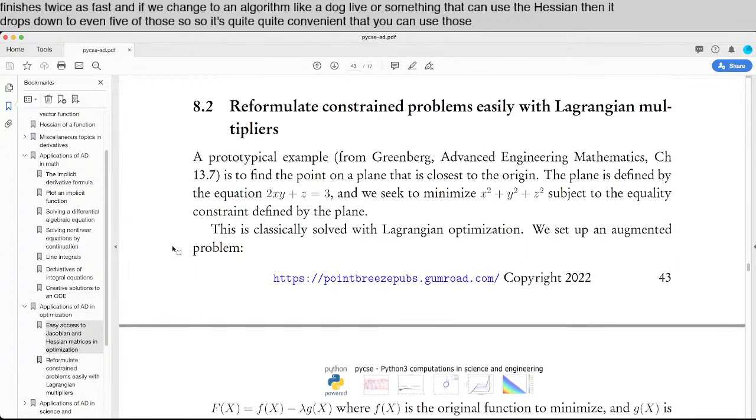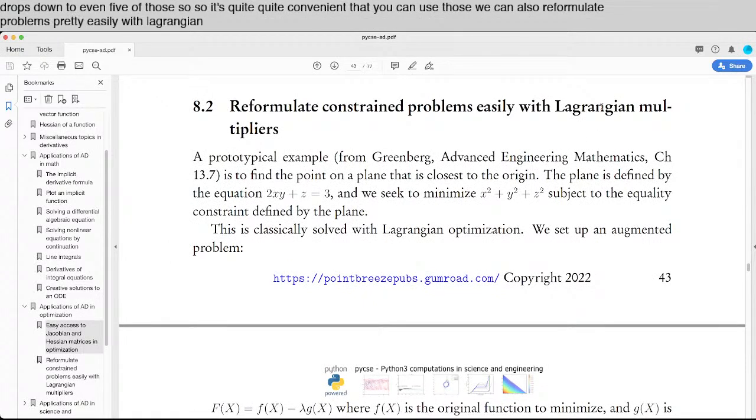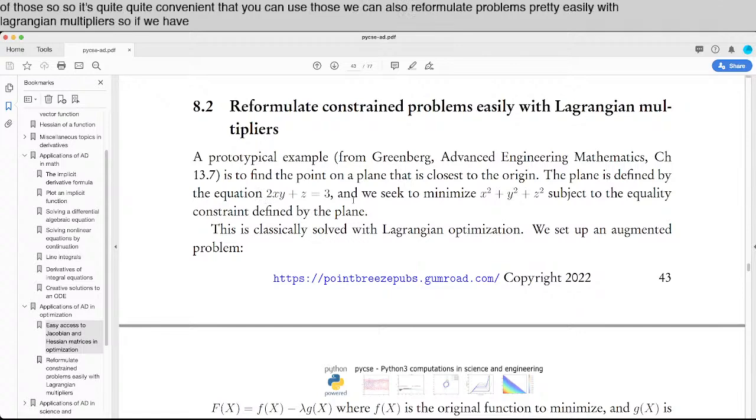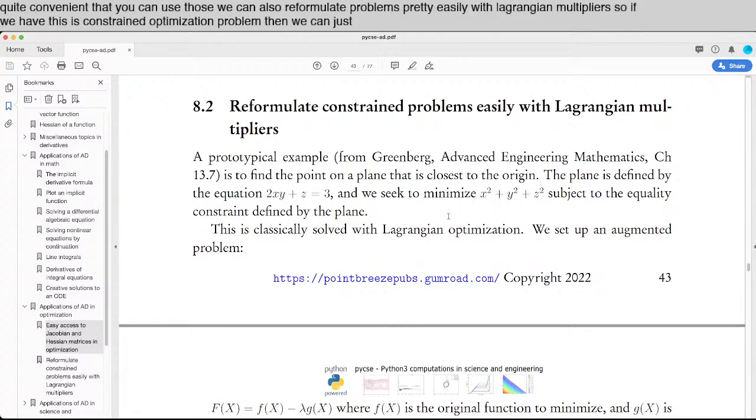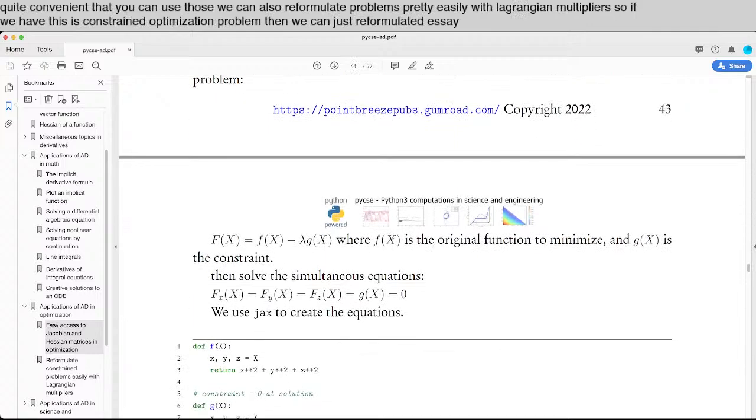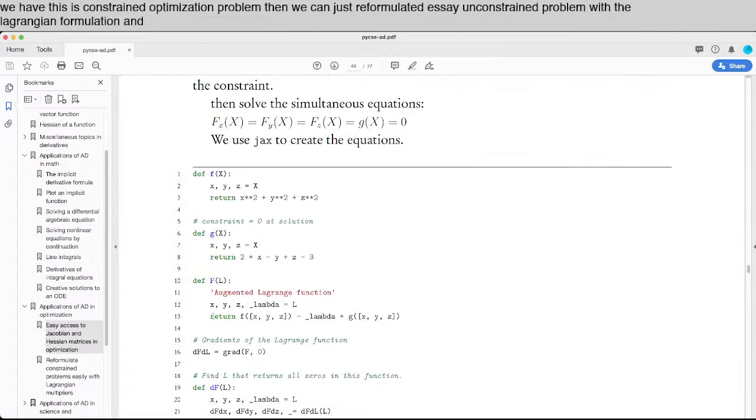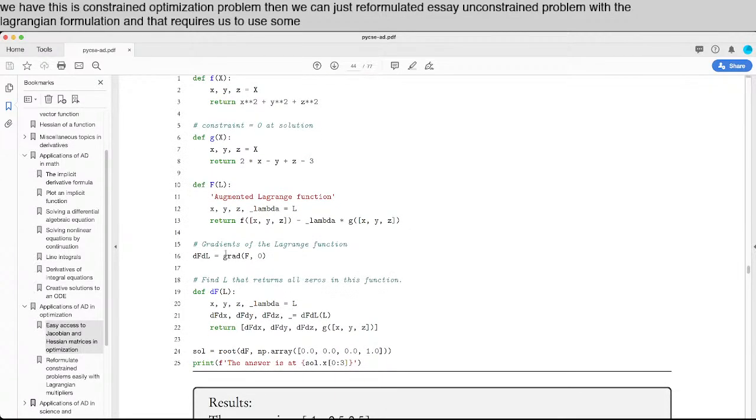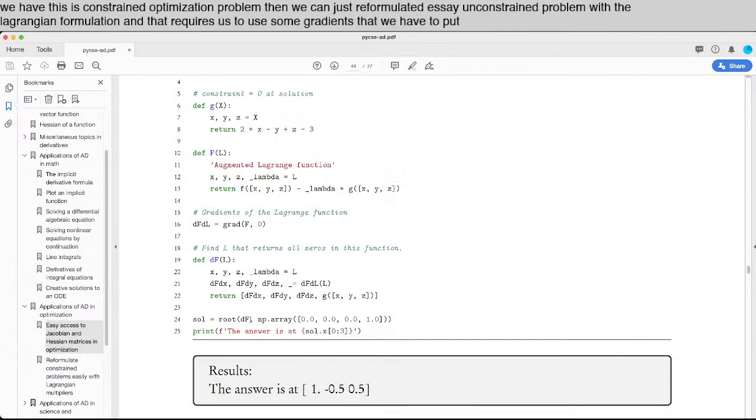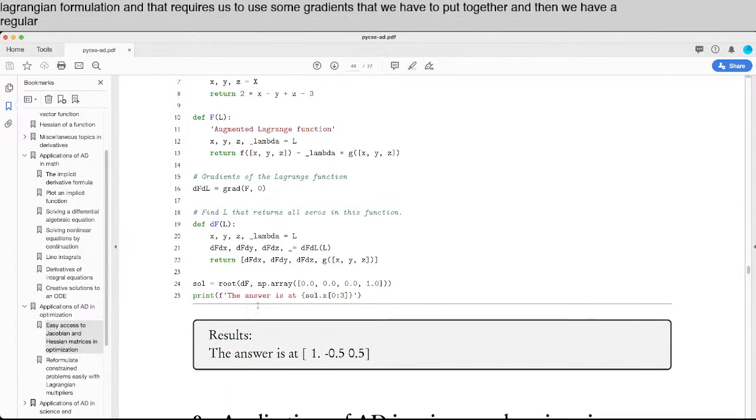We can also reformulate problems pretty easily with Lagrangian multipliers. So if we have this constrained optimization problem, then we can just reformulate it as an unconstrained problem with the Lagrangian formulation. And that requires us to use some gradients that we have to put together. And then we have a regular unconstrained problem to solve.